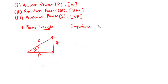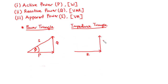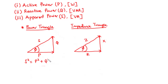Considering the impedance triangle, we have the resistance along the horizontal axis, the reactance along the vertical axis, and the resultant is the impedance. Phi is the phase angle between Z and R. From the power triangle, the square of the apparent power is equal to the square of the active power plus the square of the reactive power. Let's call this equation 1.